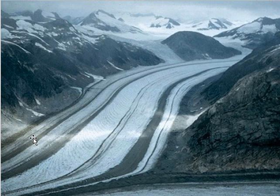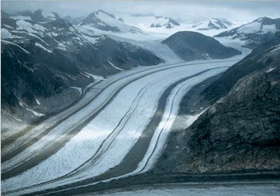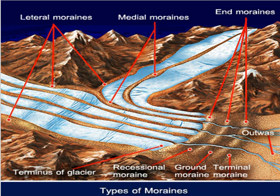We can see that erosion — we can see those rocks being transported because we can see these glacial stripes, almost like race stripes in the middle of the glacier. We call these moraines, and those are basically big piles of rocks being transported by the glacier.